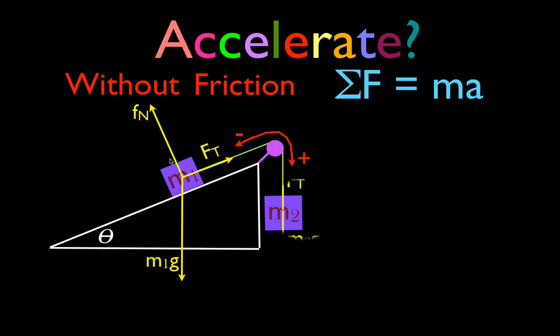There are two forces acting on M2. There's the weight of M2, the force due to gravity, and then the tension force because M2 is also attached to that string.